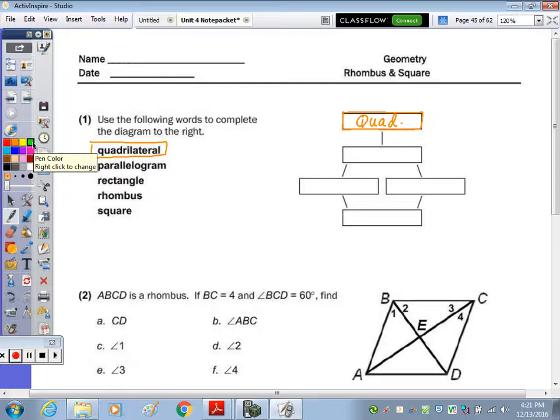Underneath would fall the parallelogram, as the rectangle, rhombus, and square are all parallelograms. But the next two boxes, so side by side, would be your rectangle and rhombus, because a rhombus is not a rectangle, and a rectangle is not a rhombus. But the square is both a rectangle and rhombus, so that would fall underneath.